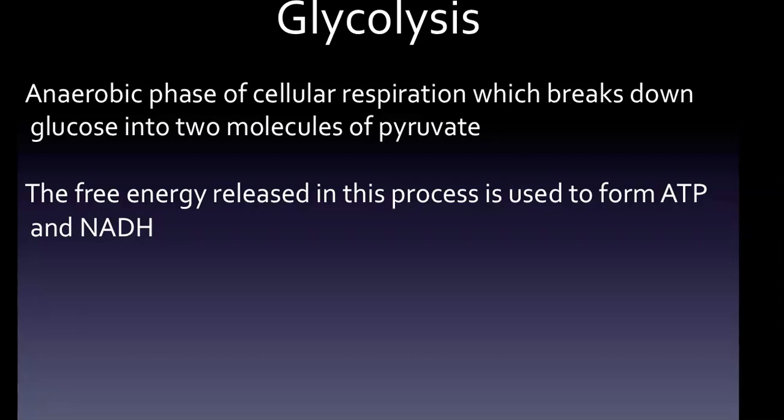Most monosaccharides such as fructose and galactose can be converted to one of these intermediates. Pyruvic acid can be made from glucose through glycolysis, converted back to carbohydrates such as glucose via glycolysis, or converted to fatty acids through a reaction with acetyl-CoA.